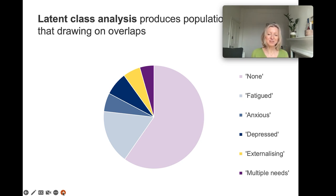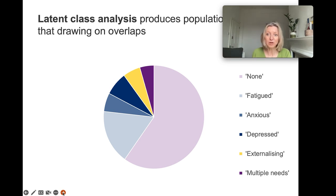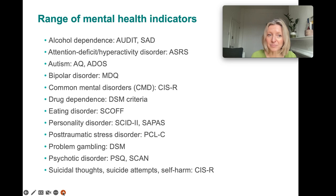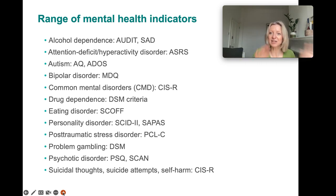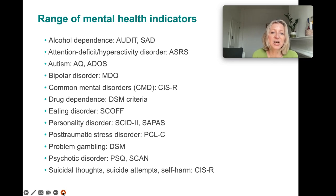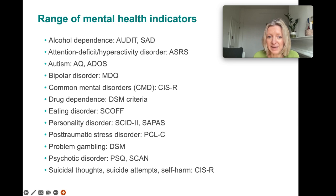Another approach we've used is latent class analysis, which allows us to produce a population segmentation looking at how different conditions might overlap — identifying those with multiple conditions and those with few. This is possible because the survey covers such a wide range of mental health problems, symptoms, and conditions: you can look at substance dependence, very specific and quite rare disorders such as eating disorders, and things like problem gambling as well.